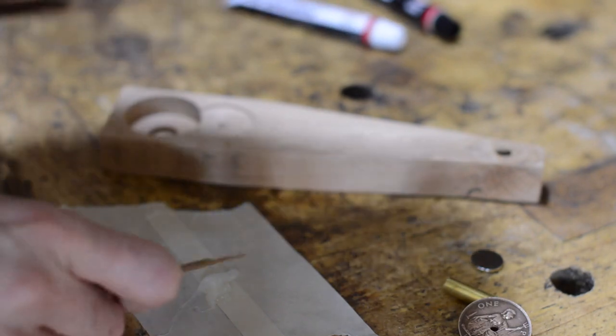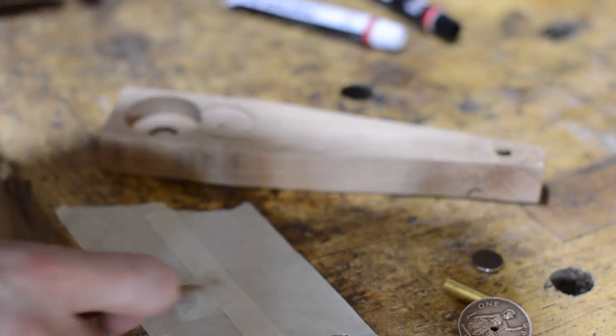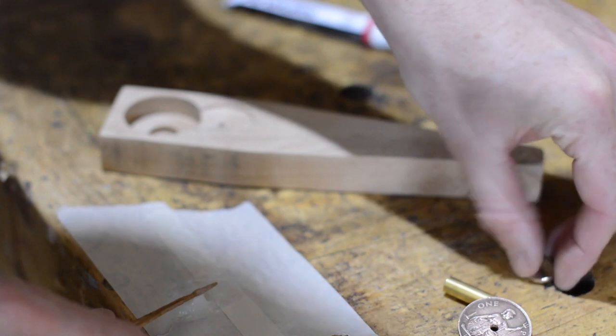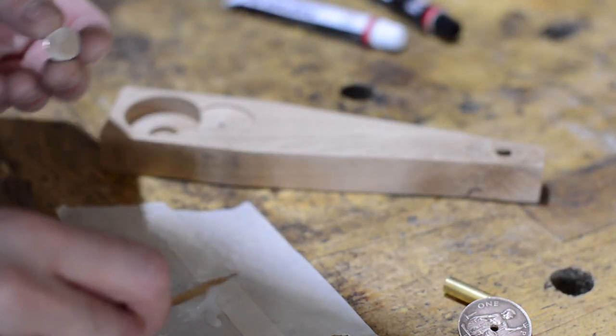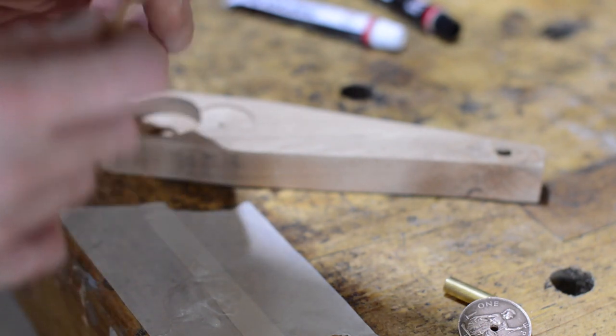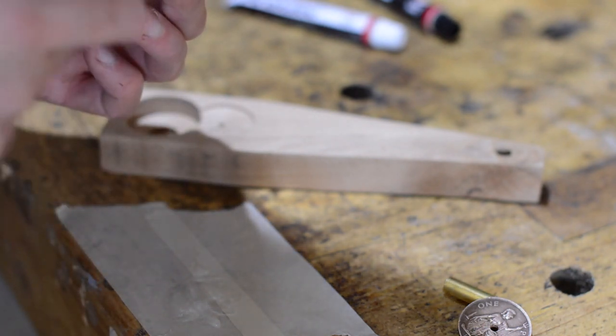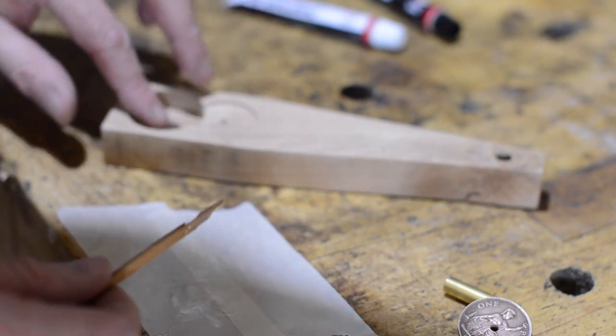I'm going to attach everything with some two part five minute epoxy. The first bit to go in is a magnet that goes into the small hole, which is in the big hole. This will stop the beer bottle cap falling out once it's been opened, making for a silent opener. Good for those times when you want a cheeky, sneaky beer.